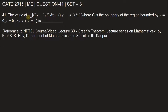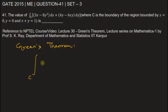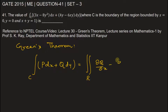We need to find the value of this line integral. This problem can be solved using Green's theorem. According to Green's theorem, the integral over curve C of P dx plus Q dy is equal to the double integral over the bounded region R of the partial derivative of Q with respect to x minus the partial derivative of P with respect to y, times dx dy.